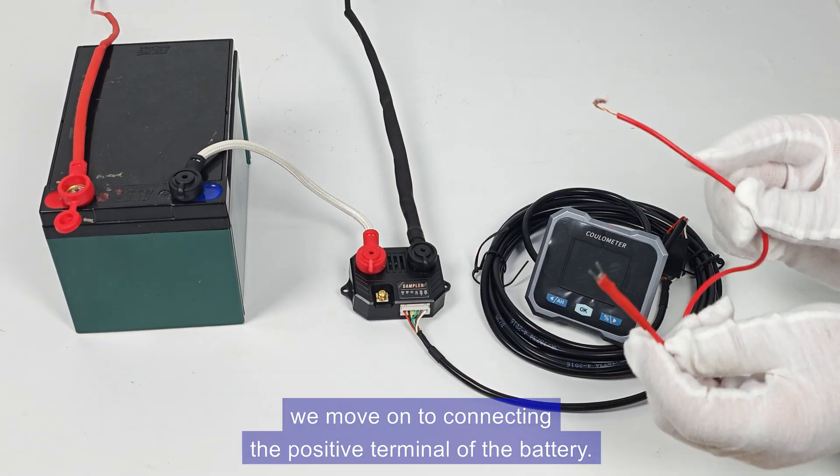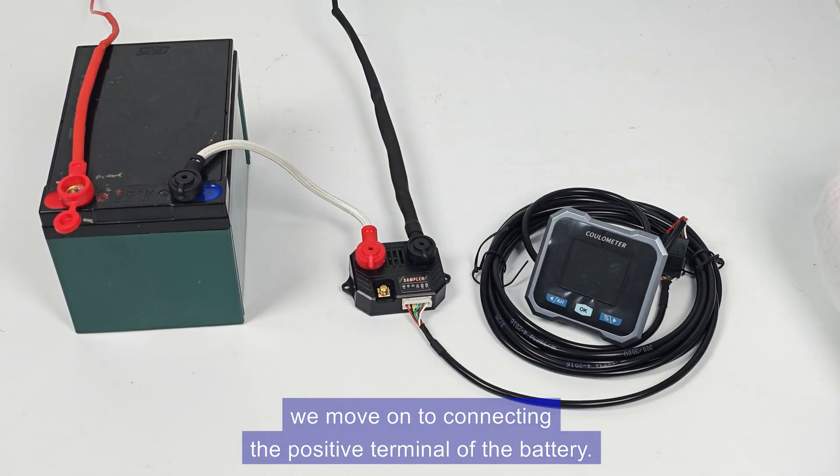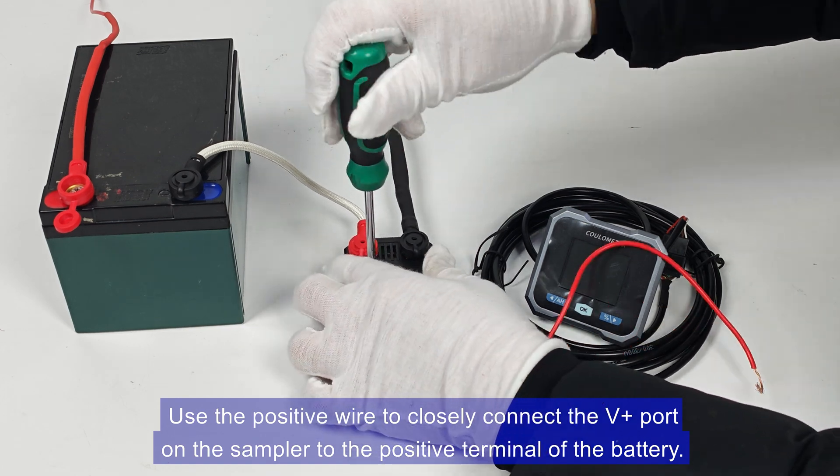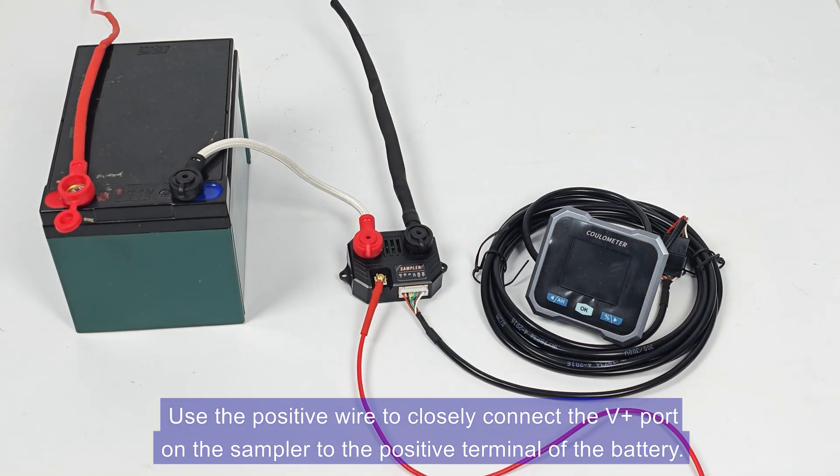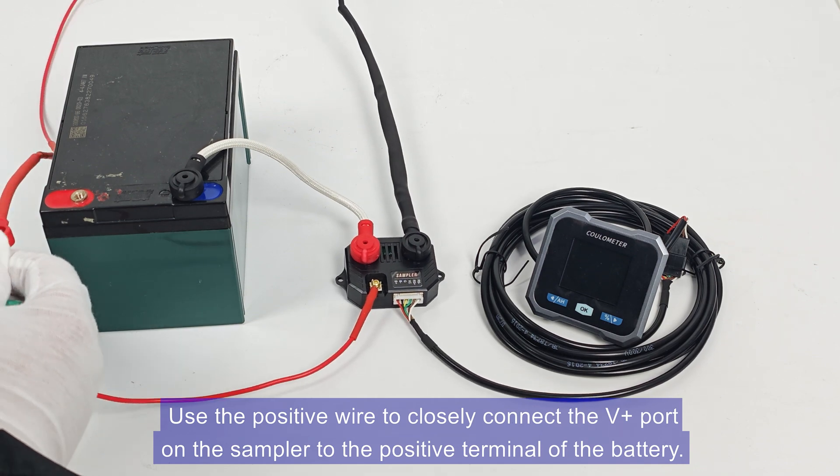Then, we move on to connecting the positive terminal of the battery. Use the positive wire to closely connect the V+ port on the sampler to the positive terminal of the battery.